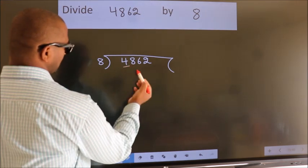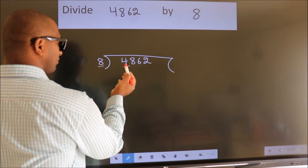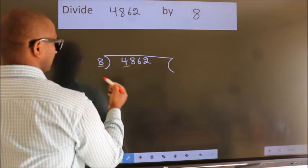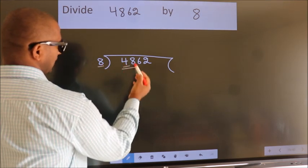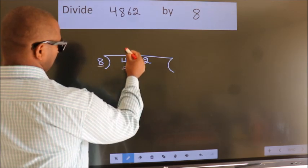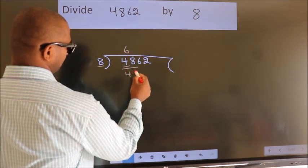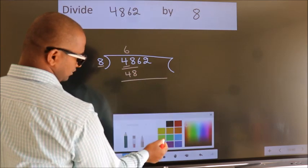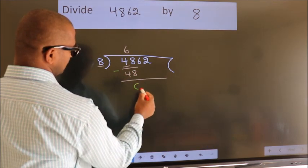Here we have 4. Here 8. 4 is smaller than 8, so we should take two numbers: 48. When do we get 48 in 8 table? 8 times 6 is 48. Now we should subtract. We get 0.